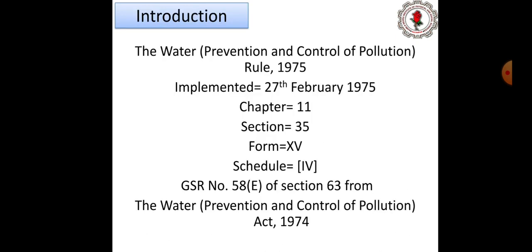This act is GSR Number 58E of Section 63. Section 63 of the Water Act says the central government shall have power to make rules — that is where it comes from. It is taken from the Water Prevention and Control of Pollution Act 1974. If you write up to the schedules, that is enough, but you need complete information. You can take screenshots and make your notes.